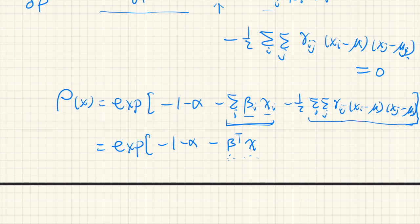And also for this, this is a quadratic form. And if we define a new matrix Γ, whose i, j element is γ_ij, then this quadratic form can be written as (x - μ) transpose Γ (x - μ).